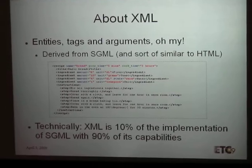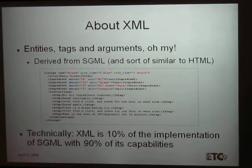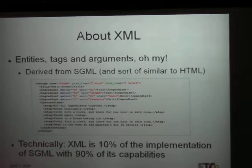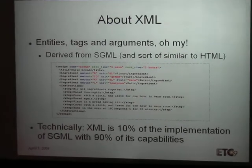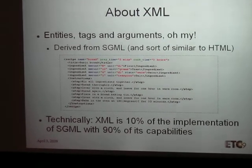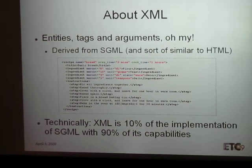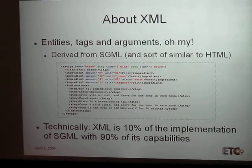From a technical point of view, XML is 10% of the implementation of SGML with 90% of its capabilities, which is nice, which lets you do a lot, and makes it a lot less complex than SGML.